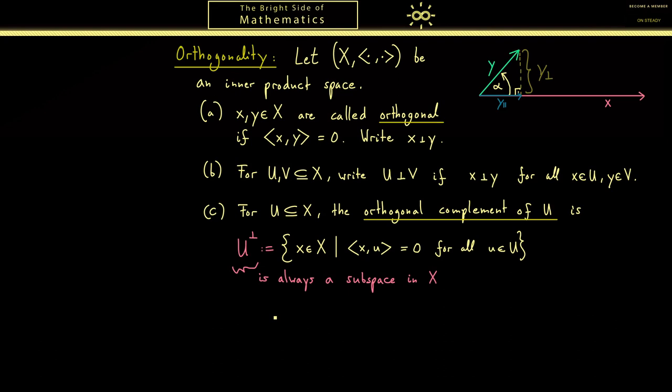In the same way now we can show that the orthogonal complement of the zero vector is just the whole space. And the other way around the orthogonal complement of the whole space is the zero vector, or to be more precise it's the set that only contains the zero vector. This is easy to see just by looking at the definition.